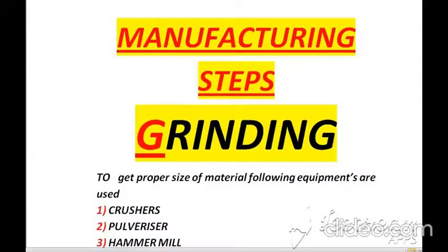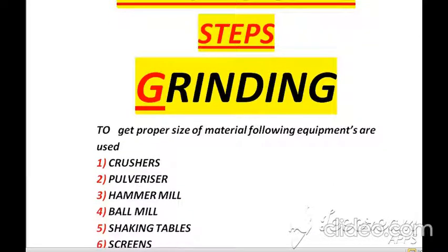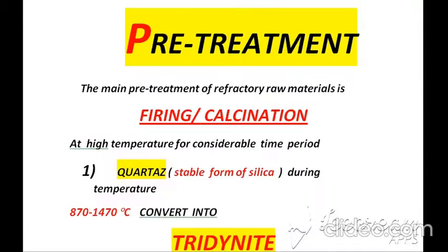According to manufacturing steps, the first step is grinding to get a proper size of material. The following equipment are used: crusher, pulverizer, hammer mill, ball mill, shaking tables, and screen.